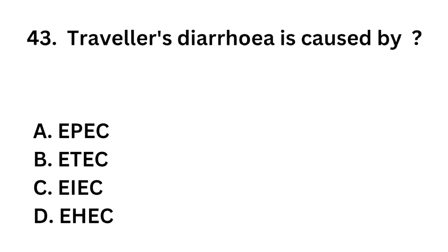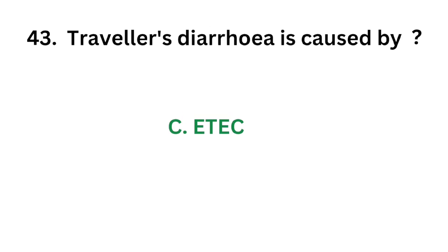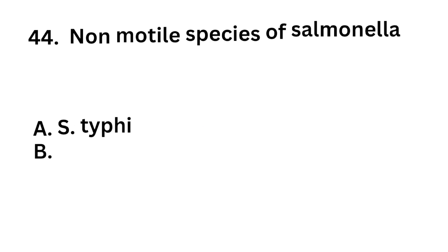Question number 43: Traveler's diarrhea is caused by which category of E. coli? Option A: EPEC (enteropathogenic E. coli). Option B: ETEC (enterotoxigenic E. coli). Option C: EIEC (enteroinvasive E. coli). Option D: EHEC (enterohemorrhagic E. coli). The correct answer is Option B: ETEC (enterotoxigenic E. coli). Traveler's diarrhea is caused by ETEC.